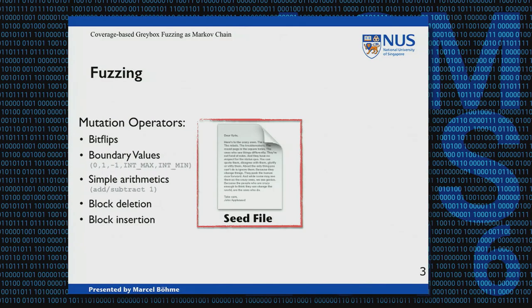Coverage-based gray box fuzzing is in between black box fuzzing and white box fuzzing, as the name already says. You get path exploration, which is the benefit of white box fuzzing, and you do not require program analysis, which gives you the scalability and efficiency of black box fuzzing.